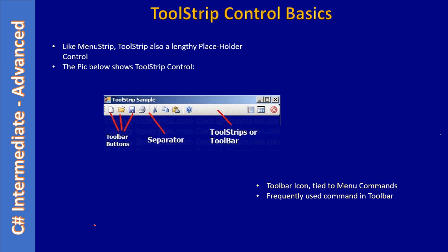Usually, frequently used commands are placed in a toolbar. When you click a menu you may see multiple options — for example, clicking the Edit menu may show 20 or 25 options. But in the toolbar you may see only three or four of the Edit commands, meaning frequently used commands are placed in the toolbar for easy access. This helps the user quickly execute a specific command just by clicking the toolbar button.